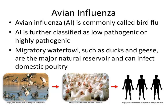Three prominent subtypes of avian influenza A viruses known to infect both birds and people are the subtypes H5, H7, and H9. Avian influenza viruses are further classified based on pathogenicity, which refers to their ability to produce disease in birds. Low pathogenic viruses are responsible for causing mild disease in birds, while highly pathogenic viruses are responsible for causing severe disease in birds.